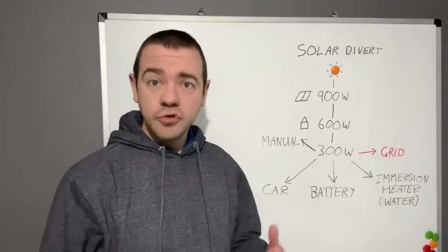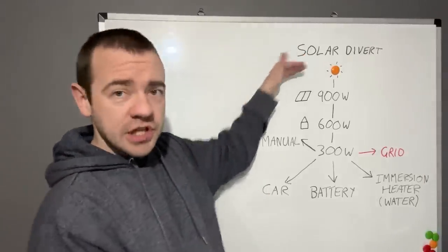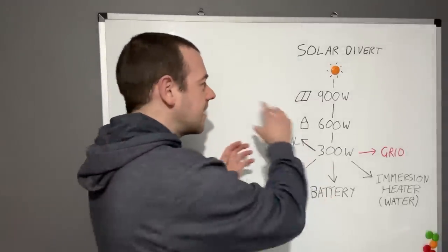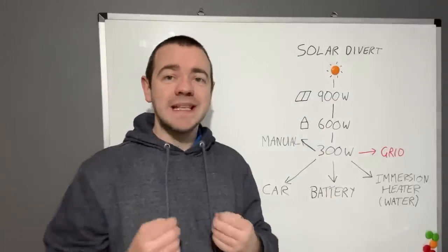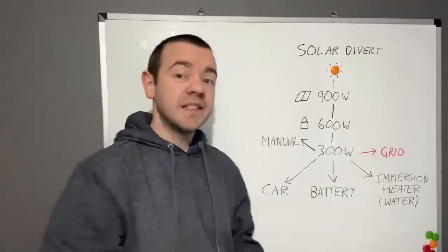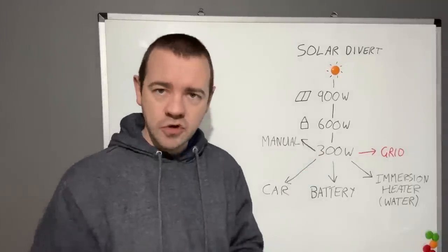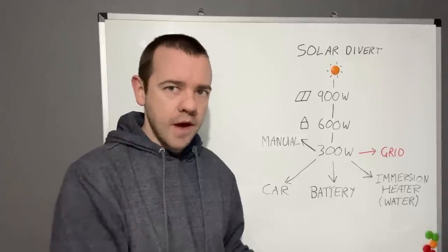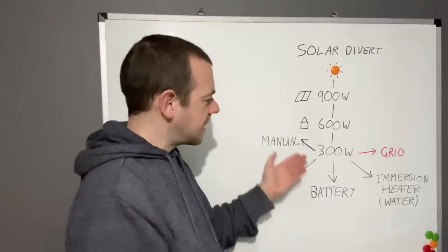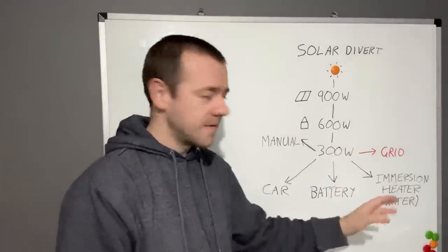For those that are unsure as to what solar divert or excess solar is, effectively the sun shines down on your solar panels and then they generate electricity. So let's imagine you're generating 900 watts right now, your house is using 600 watts. That means you've got 300 watts of excess solar to do something with. If you don't have any solar divert options, then essentially it will all go and get exported to the grid. That's why I put it in red, because that's bad.